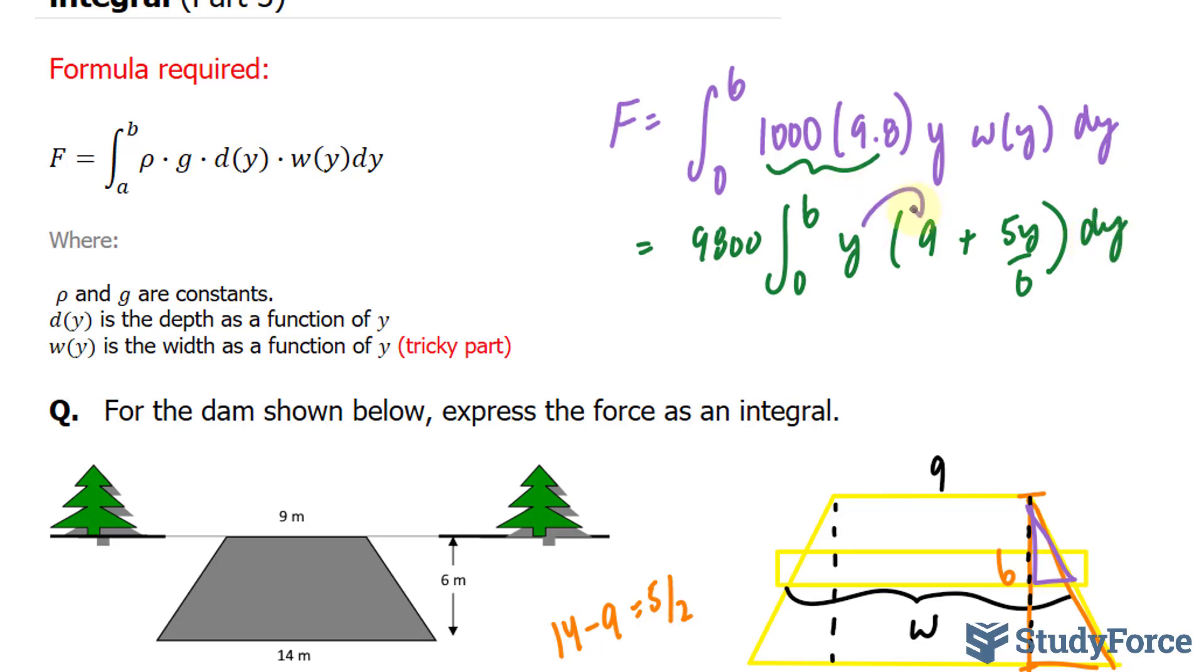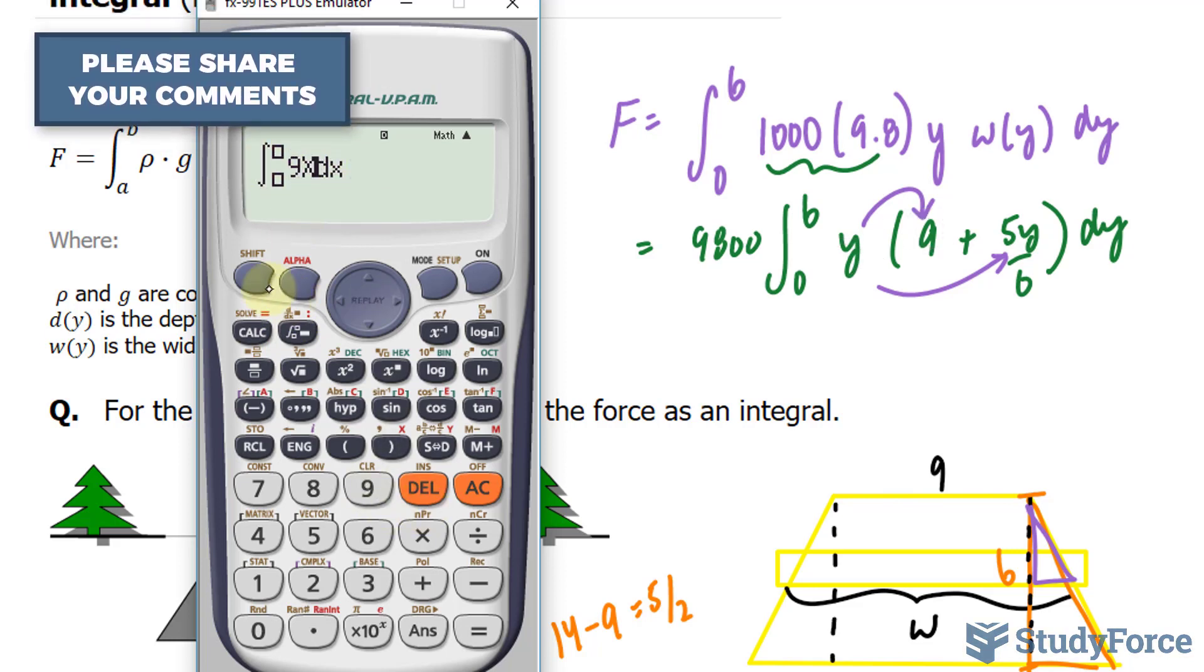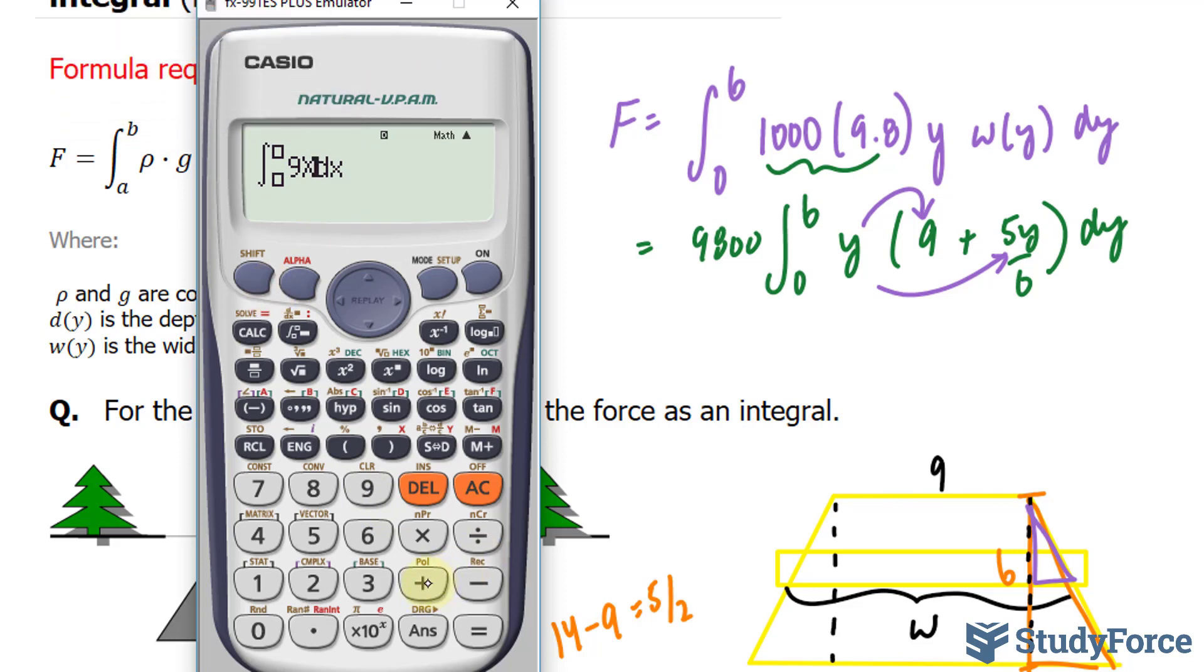What you would do next is expand the expression, and instead of doing this manually, I'm going to use my calculator, because we all know by now how to integrate simple functions like 9y and functions like y to the power of 2. So I'm going to use the function that will enable me to do this. We'll start with 9y, it's an x because it's in terms of x here, but just make a mental note that we are in terms of y, it won't change anything, plus 5x to the power of 2 over 6, and I know about this, I haven't forgotten, I'll find out what this is first, and I'll put my bounds as 6 and 0, I get 222 times 9,800, that gives me 2,175,600.